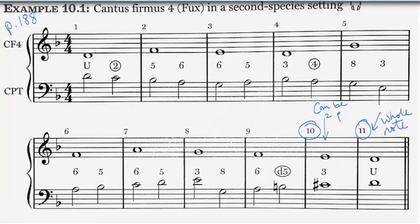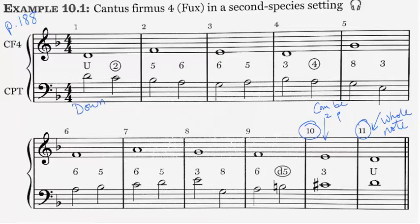You should notice a couple of things as you look at this. This is the first time we have a sense of meter or metric hierarchy, where we have a downbeat, which is the first beat of every measure, and then we also have an offbeat. And the downbeat is, of course, stronger than the offbeat.